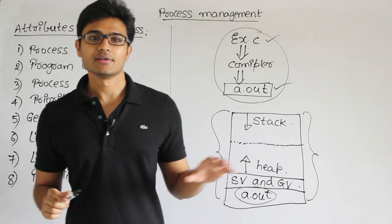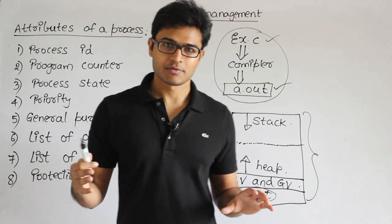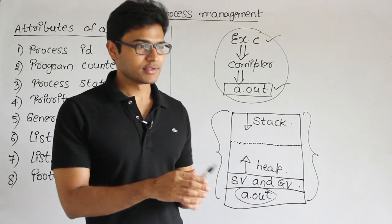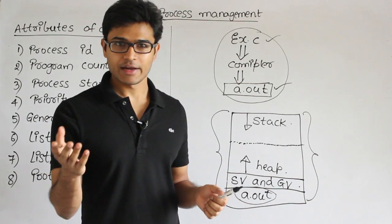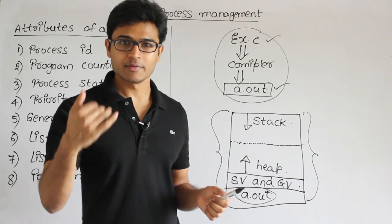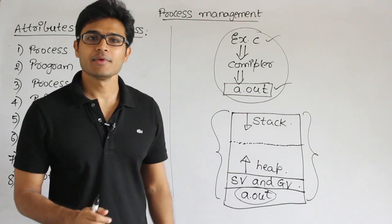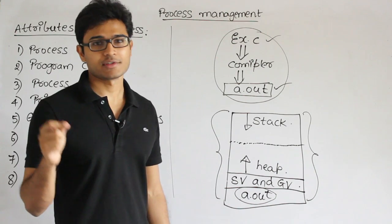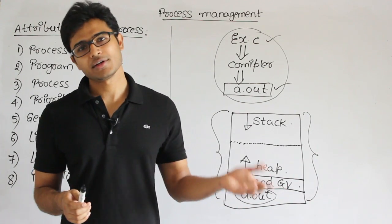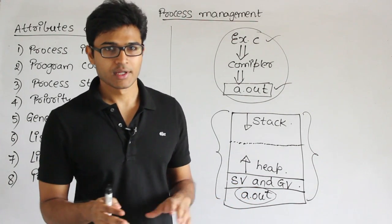How can you identify a process? Given so many processes in the operating system — just like we have so many people in the world — we are going to use something called identification cards. When we have many processes created in memory randomly, we need to keep track of which process is what, how many processes there are, what the current state of the process is — is it running, is it blocked? So we need some bookkeeping work.